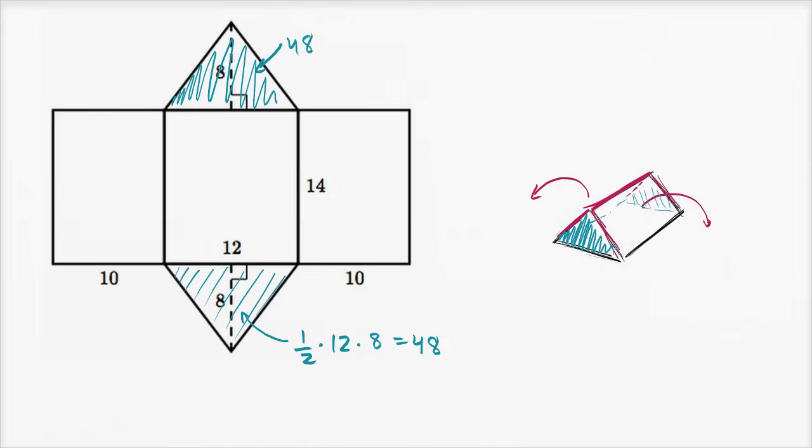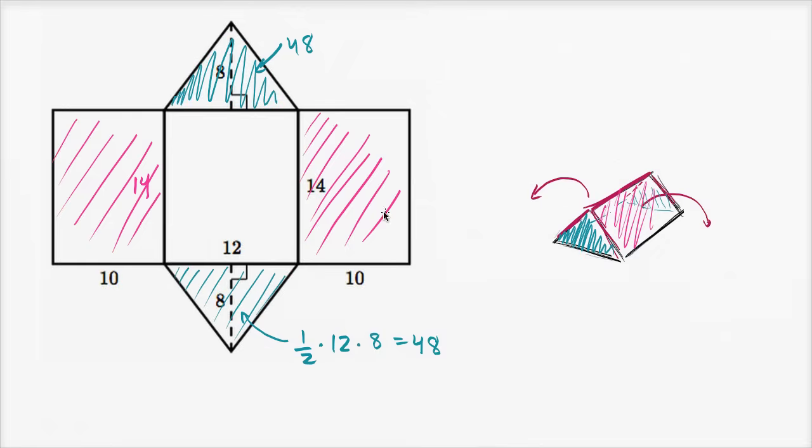Now we can think about the areas of the side panels. So that's a side panel right over there. It's 14 high and 10 wide, this is the other side panel. This length right over here is the same as this length, so it's also 14 high and 10 wide. So this side panel is this one right over here, and then you have one on the other side. And so the area of each of these, 14 times 10, they are 140 square units. This one is also 140 square units.